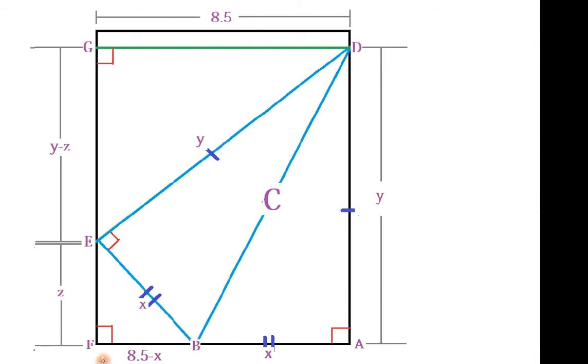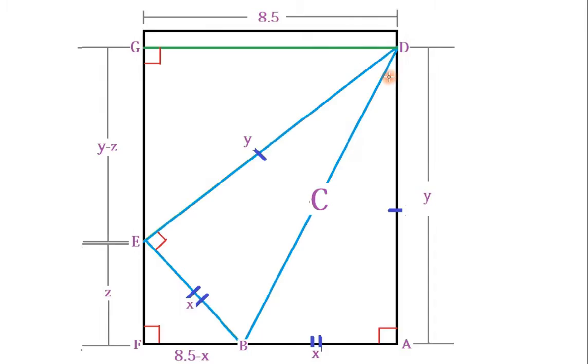So, let's go to this diagram which is more elaborate. In this diagram, I structure it so I can label each length with a different variable. So for example, from D to A is Y, from B to A is X, from F to B is 8.5 minus X, from E to F is Z, from G to E is Y minus Z, and from E to D again is Y.